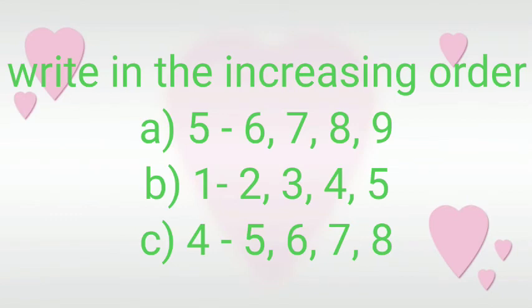See how to write in the increasing order. A number 5, after 5, 6, 7, 8, 9. Just like B, 1, after one is 2, 3, 4, 5. And last is 4, after 4 what come? 5, 6, 7, 8. Yes, I think all are understand the increasing order.